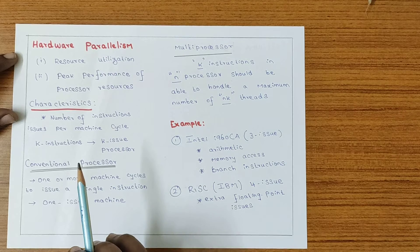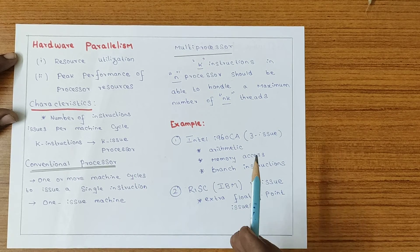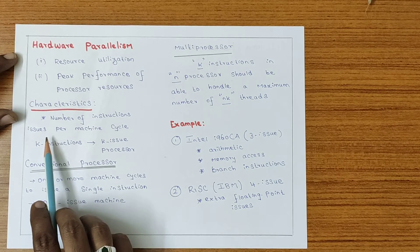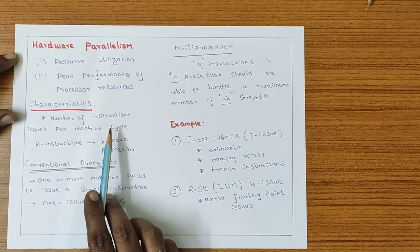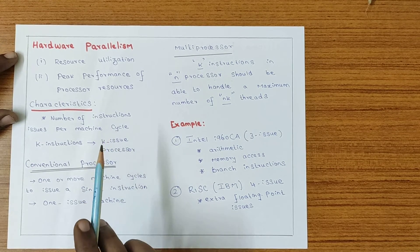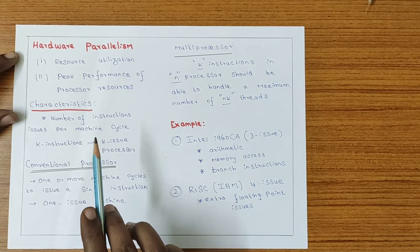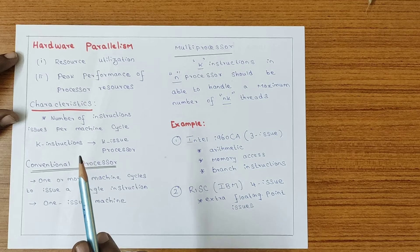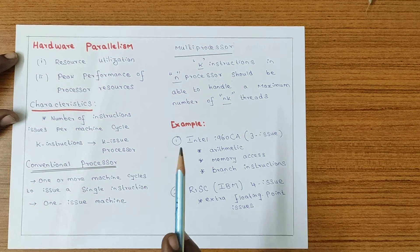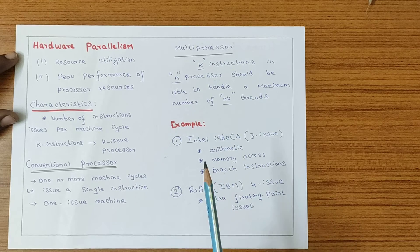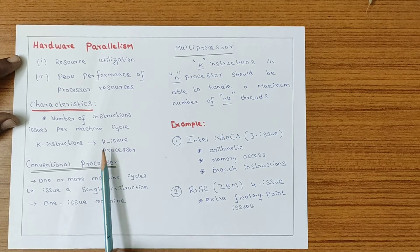In parallelism, multiple processors can execute multiple instructions. Consider three instructions: an arithmetic instruction, a memory instruction, and a branching instruction — three issues per machine cycle, which means per clock cycle. These three instructions can be executed simultaneously in one clock cycle. This means one processor can handle all three issues at once, so we call it a K-issue processor.